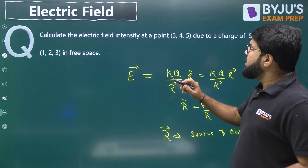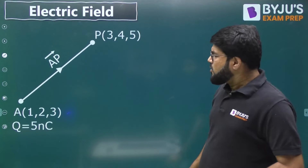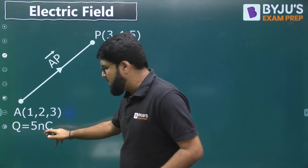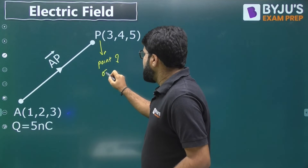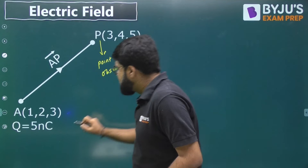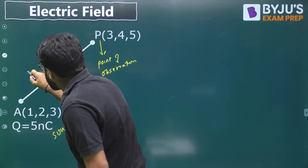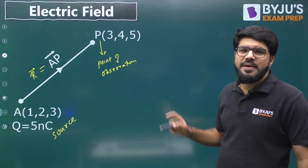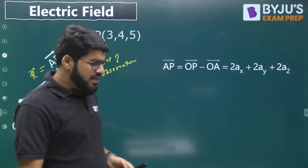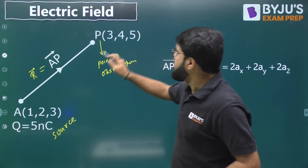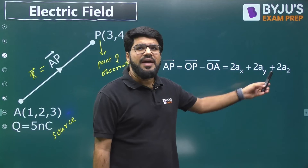Let us understand this with a question. Calculate the electric field intensity at point (3, 4, 5) due to a charge of 5 nanocoulomb placed at the point (1, 2, 3) in free space. There is a source point A at (1, 2, 3) and a point of observation P at (3, 4, 5). First, let us find the vector AP — the vector r joining A to P — using position vector of second point minus first point, that is OP minus OA. Solving: x-component 3 minus 1 is 2, y-component 4 minus 2 is 2, z-component 5 minus 3 is 2. So vector AP is 2ax + 2ay + 2az.